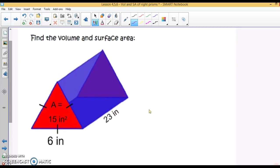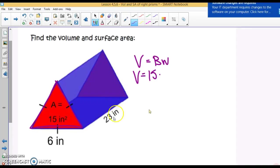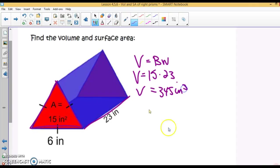Find the volume of this prism. It's a triangular prism. Volume is capital B times W. Capital B is the area of the base. Look, they gave us the area of the base. It's 15. So volume is going to be 15 times, what's our width? 23. I end up with 345 cubic inches.